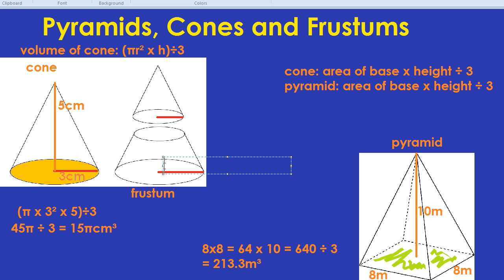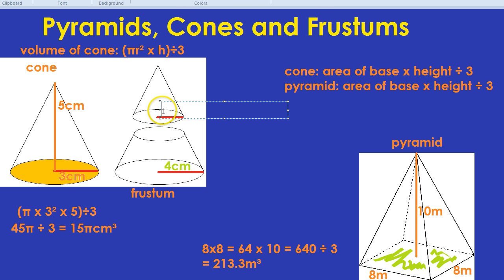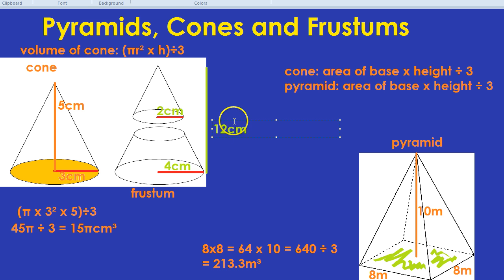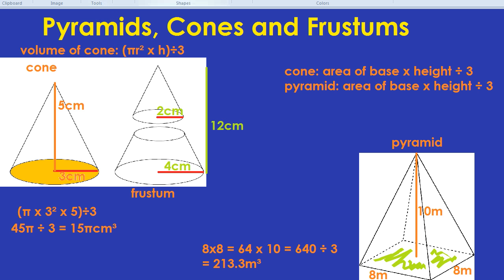Let's imagine the big cone has a radius of four centimeters, and the small cone has a radius of two centimeters. The height of the whole big cone, if put together, is 12 centimeters, and the height of the little one on its own is just three centimeters. That's enough information to find the volume.